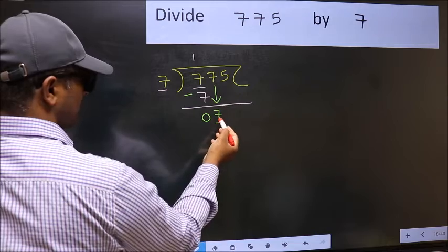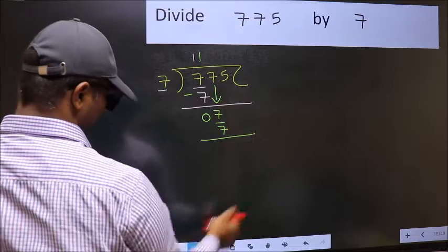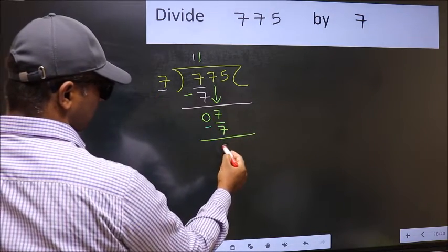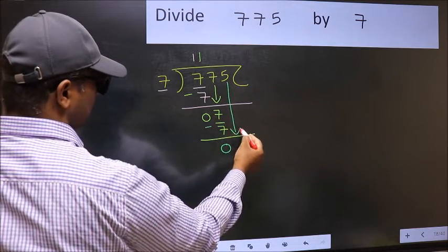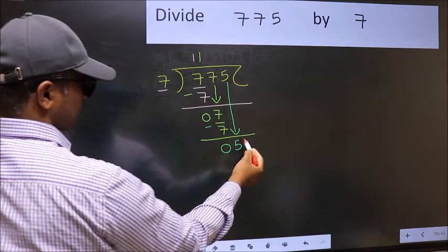Now 7. When do we get 7 in the 7 table? 7 once is 7. Now you should subtract. 7 minus 7, 0. After this, bring down the beside number. So 5 down. After this step,